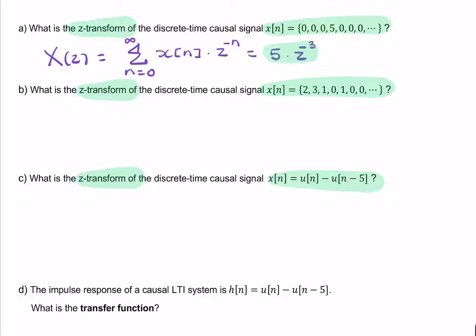The next signal is slightly more interesting, because we have fewer 0s. So we have 1, 2, 3, 4 terms that are non-zero. So to find the z-transform, we'd simply say x of z. Again, we're applying the definition. So we've got a 2 times z to the power 0, and a 3 times z to the power minus 1, a 1 times z to the minus 2, and finally a 1 times z to the minus 4.